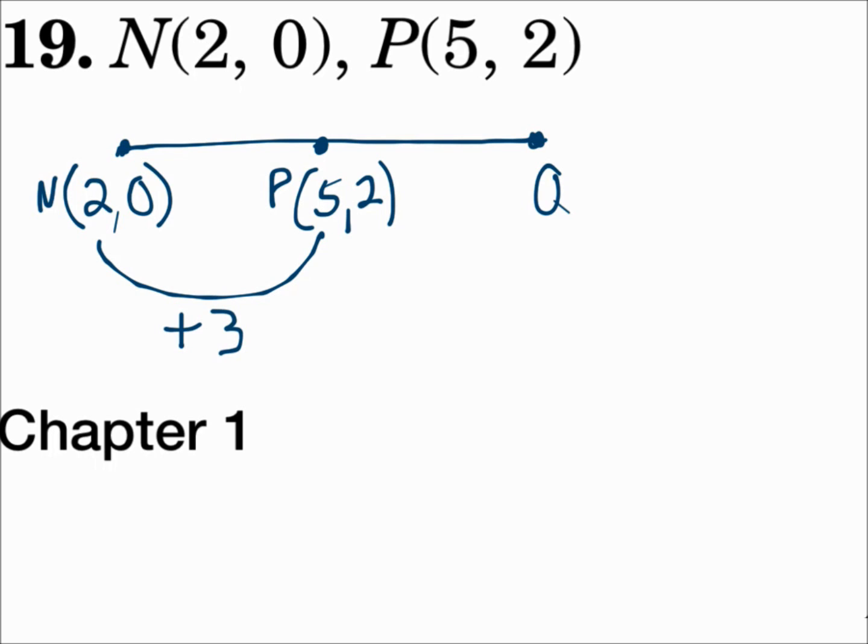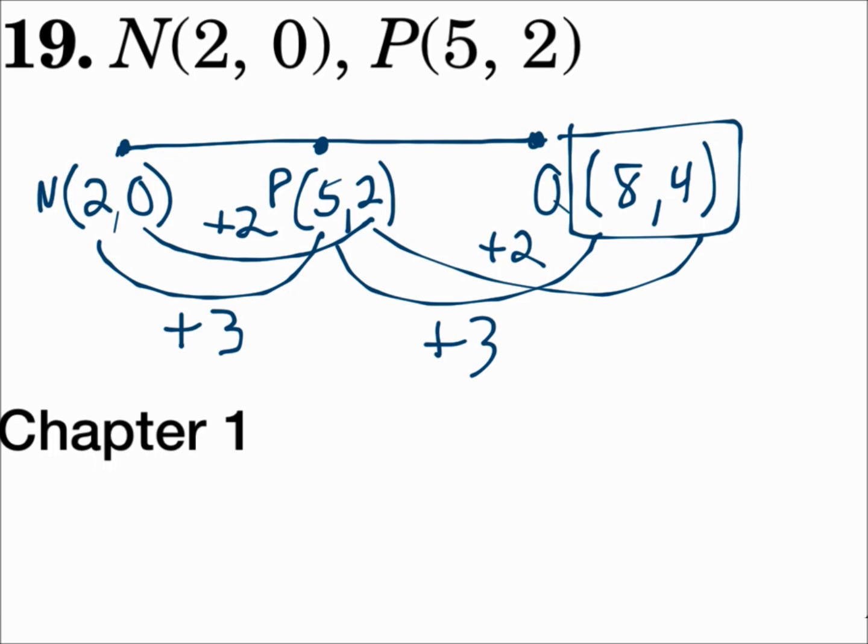The midpoint is the exact middle of this segment, which means you have to add another 3 to get to the next x value, making it 8. Look at the y's. From 0 to 2, you're adding 2. Well, add 2 more to get 4. So, (8, 4) is your other endpoint.